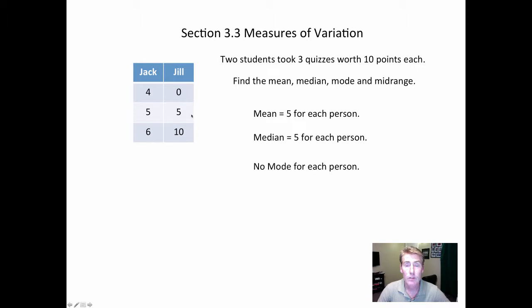The mode is the score that shows up the most. Well, there is no score that shows up the most, so no mode for either one of them. And finally, the midrange: just take the average of the biggest score and the smallest score. For Jill, that's the 10 and the zero. For Jack, it's the four and the six, and again you get the same number: five.